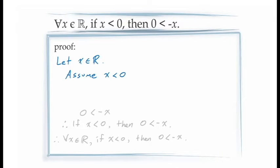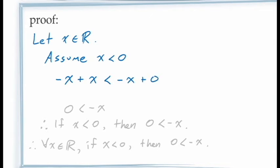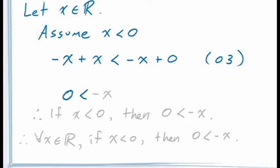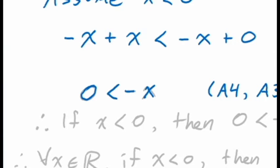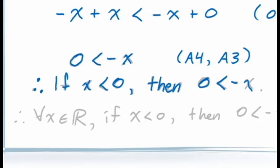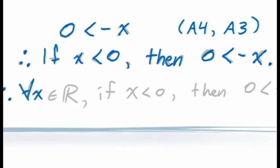Now that we have a demonstration, let's return to our proof. Our proof already includes the assumption that x < 0. We add -x to both sides, which is allowed by axiom O3 — axiom O3 says we're free to add any real number to both sides of an established inequality. We reduce the left-hand side to 0 using axiom A4, and the right-hand side to -x using axiom A3, arriving at the consequent: 0 < -x. The principle of conditional proof then allows us to conclude: if x < 0, then 0 < -x. And by the principle of universal generalization, this is true for all x in the real numbers.